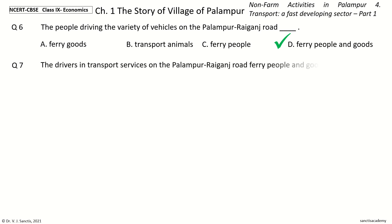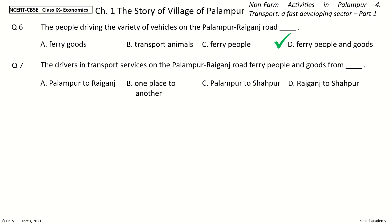Question 7: The drivers in transport services on the Palampur-Raiganj road ferry people and goods from dash. The options are: Palampur to Raiganj, One place to another, Palampur to Shahapur, Raiganj to Shahapur. And the answer is One place to another. So, the drivers ferry people and goods from one place to another.